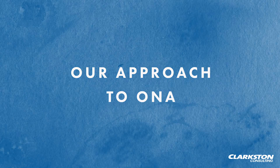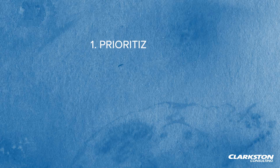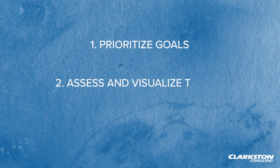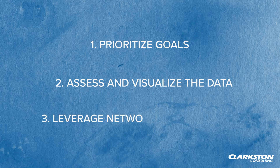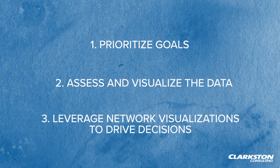Organizational network analysis is grounded in three main steps. Step 1: align on and prioritize the key goals that this analysis should support. Step 2: assess network data in the form of relationships across teams and individuals through visualization software. And Step 3: leverage the network visualizations to make actionable decisions about your organization's future.